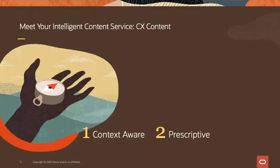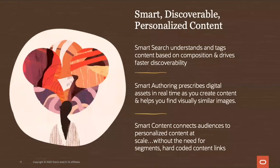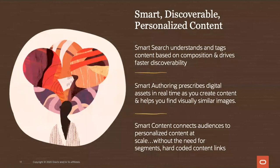By prescriptive, we mean we use a lot of image recognition and text recognition technologies, so that as you load or create content, we automatically tag it. We know that a particular image talks about breakfast, or croissants, or mountains, or rivers, making it very easy to find content later on. And as you're typing narratives, we can suggest other content you can use, including images and videos. We call this smart authoring.